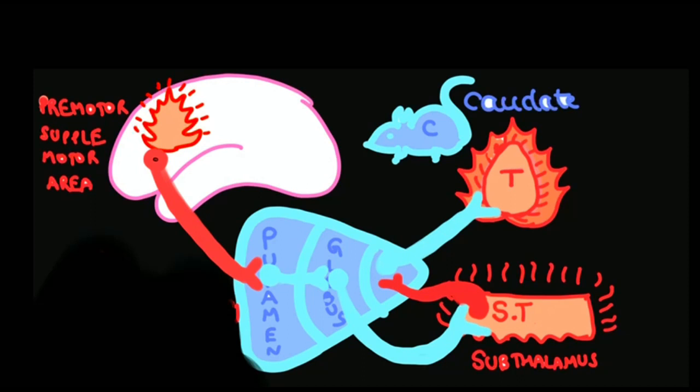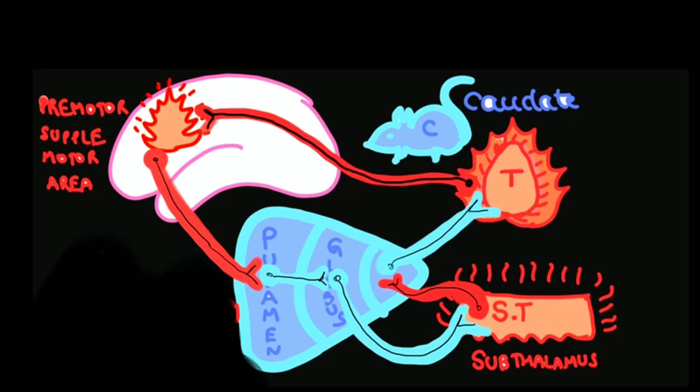Let's see what happens when the indirect pathway is stimulated. Fibers from the cortex stimulate the putamen, so a lot of ice is thrown over the GP externa nuclei. So no more inhibition to the subthalamus—now the subthalamus starts